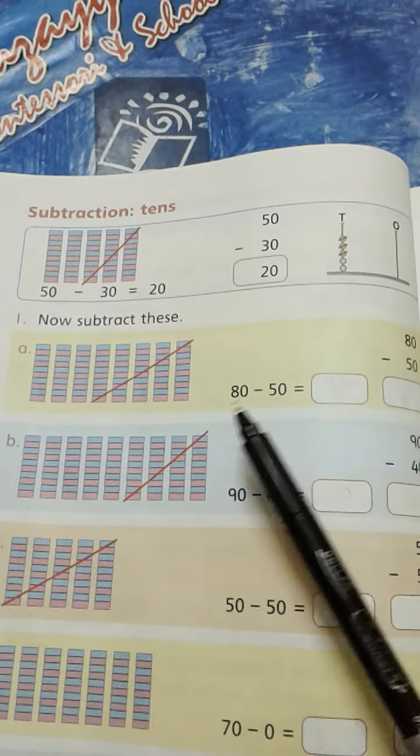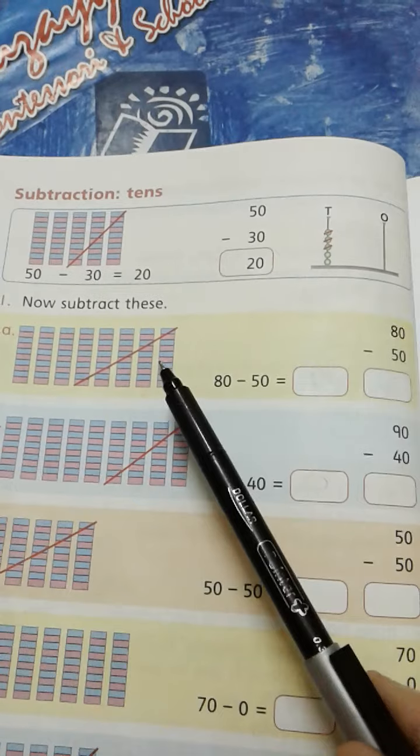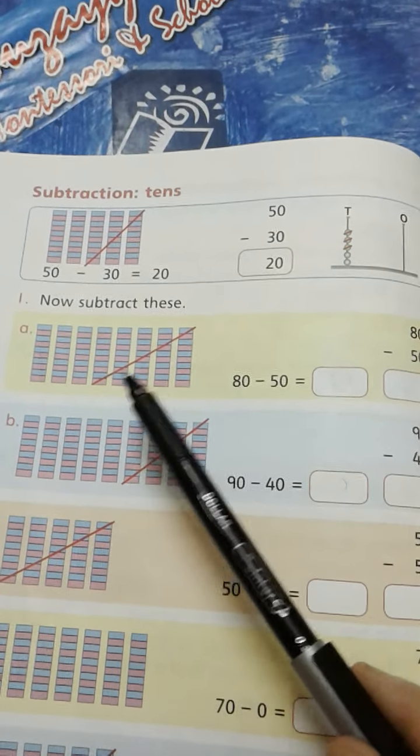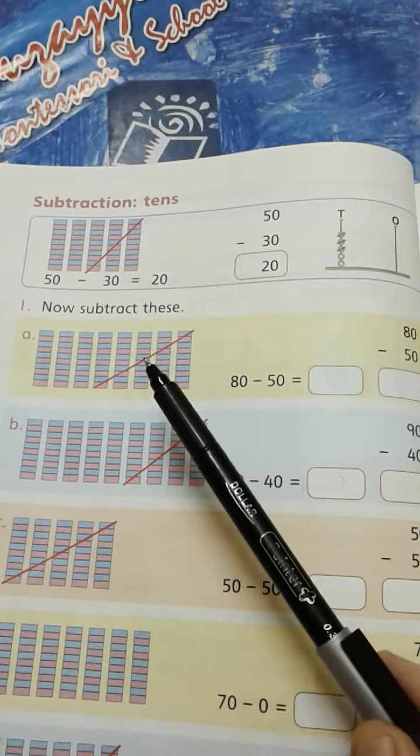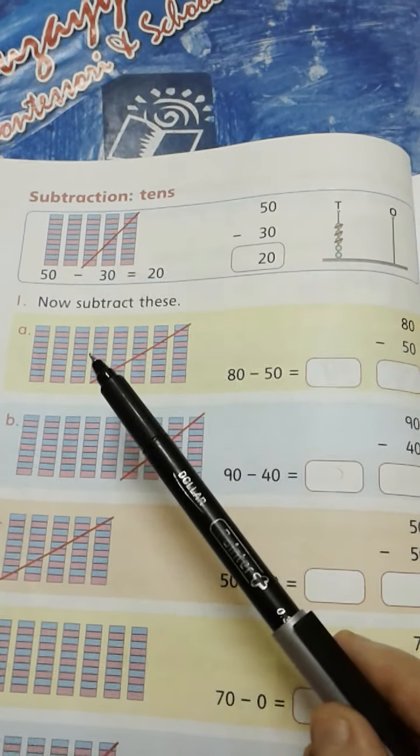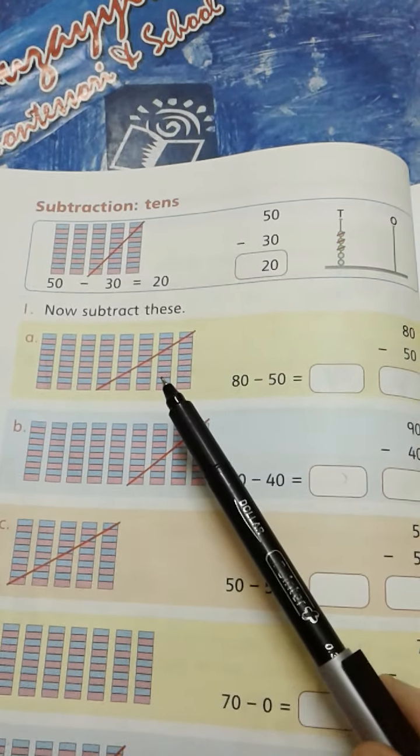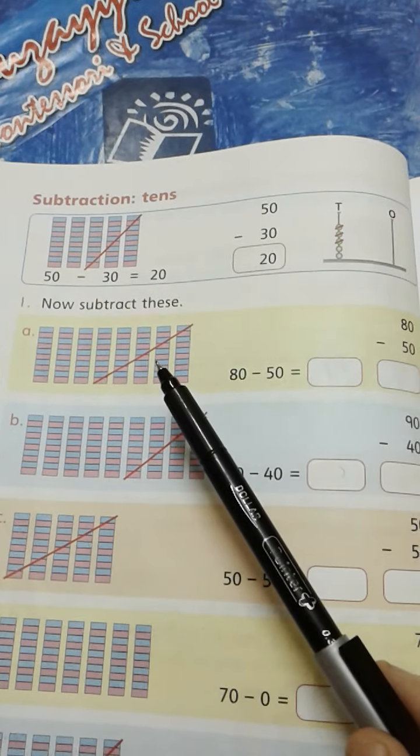Subtract these. Here you have to do subtraction in tens. First we have to see how many tens do we have over here. Here we have to see how many tens we have to subtract.